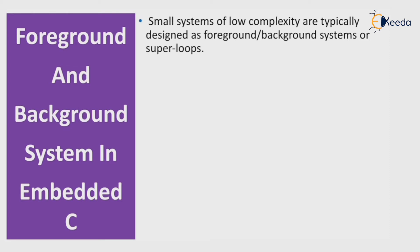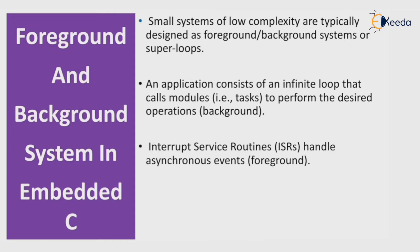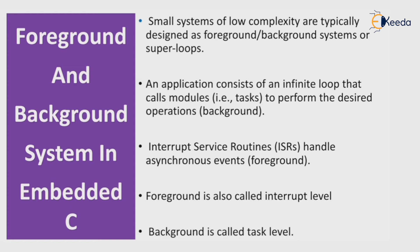Small systems of low complexity are typically designed as foreground or background systems, or super loops. An application consists of an infinite loop that calls modules — that is, tasks — to perform the desired operation, which is the background. Interrupt service routines handle asynchronous events and are known as foreground. So the task is a background process and the interrupt service routine is a foreground process. Foreground is called the interrupt level and background is called the task level.